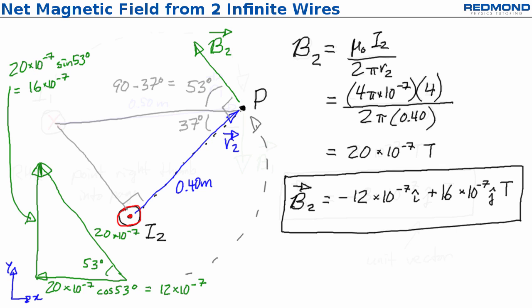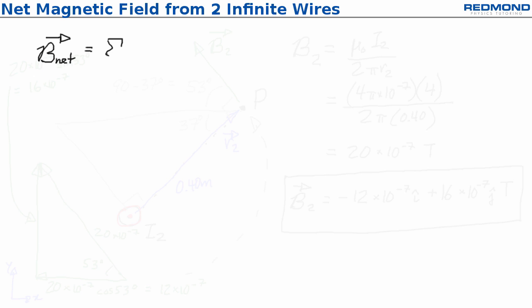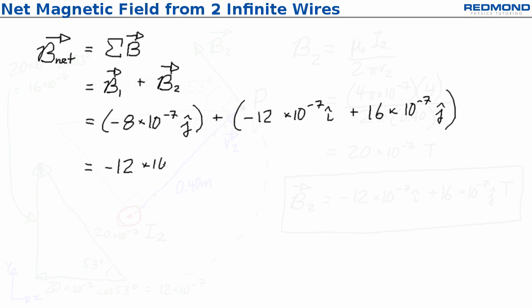There's just one part left, find the net magnetic field, which is the sum of the individual magnetic fields at point P. Bnet is equal to B1 plus B2, so I substitute the individual values, add up the i-hats and j-hats, and get Bnet is equal to negative 12 times 10 to the negative 7 i-hat plus 8 times 10 to the negative 7 j-hat tesla.